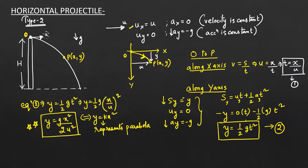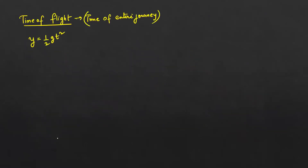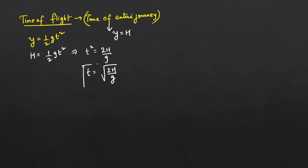For the complete journey, point P was a general point. When the particle strikes the ground, the displacement along the y-axis is h. So substituting y = h: h = ½gt², which gives t² = 2h/g, and therefore the time of flight T = √(2h/g). This is the time of flight of the horizontal projectile.